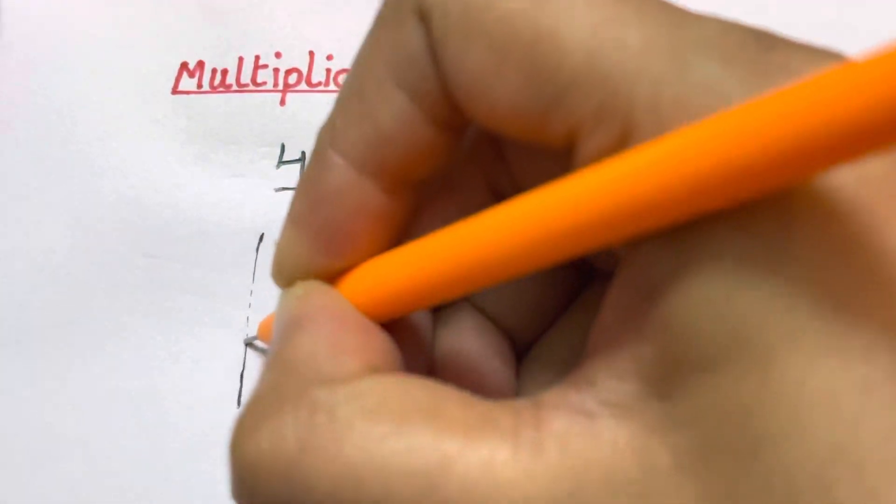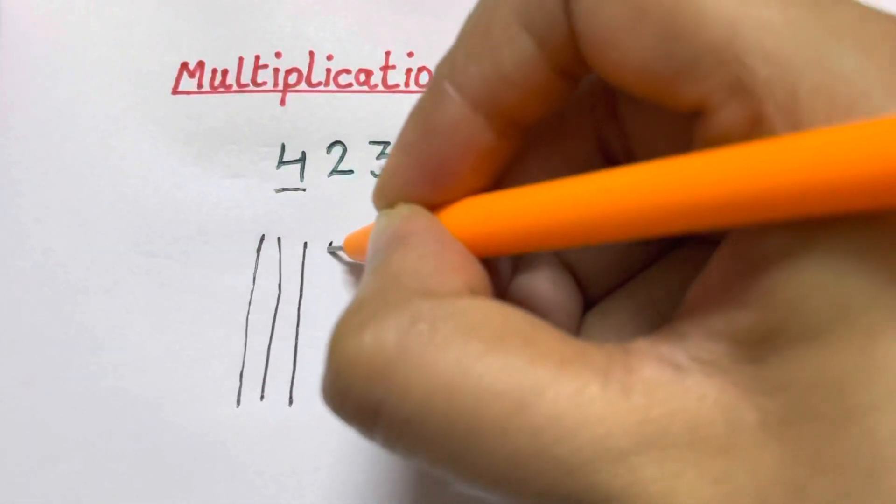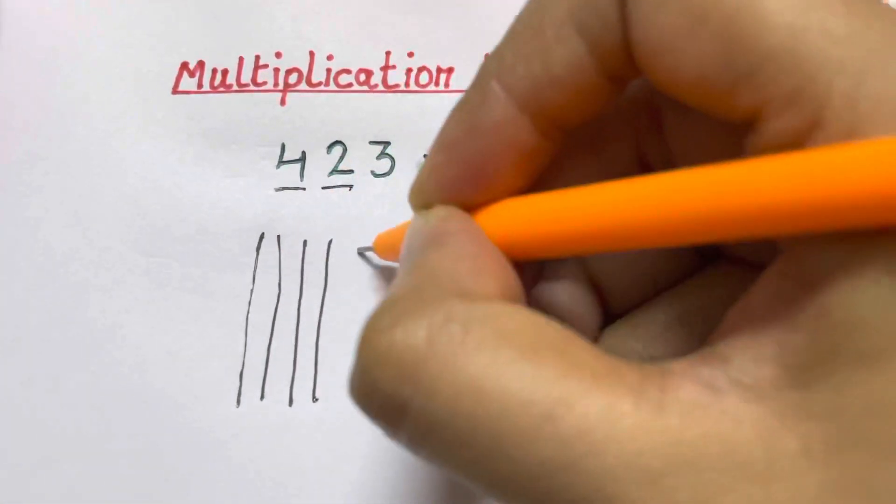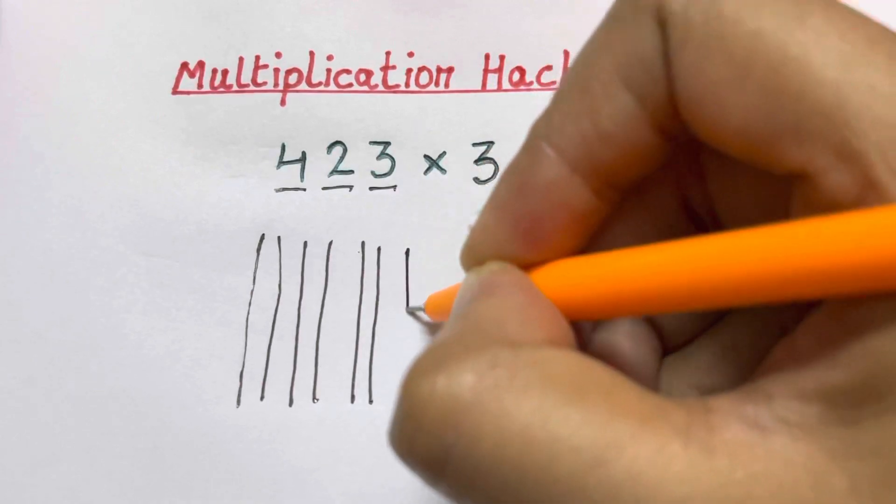So 4 for 4 lines. So you'll have 1, 2, 3 and a 4 line. Now for 2 for 2 lines. So 1 and 2. 3 for 3 lines.